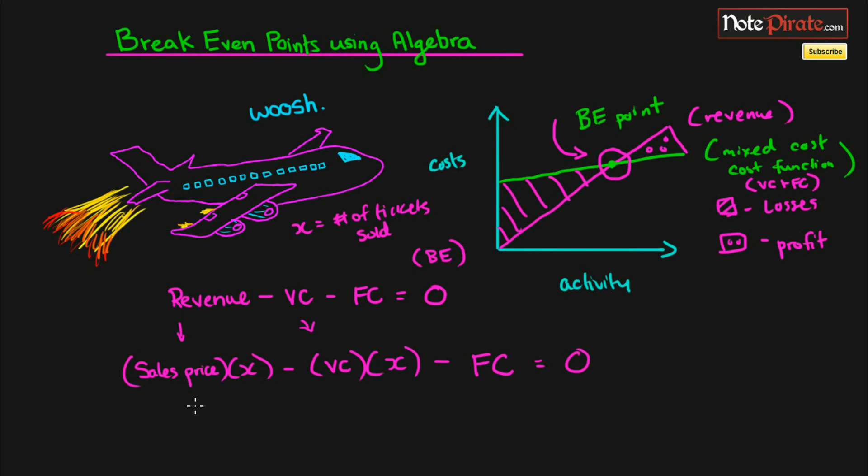We have this now, it's more expanded. To shorten it I guess we can also write it as just SP times X minus VC times X minus FC equals zero. I just abbreviated it but it looks a little bit simpler now.